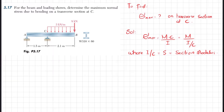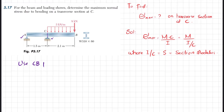The beam is supported at points A and C. Since we have been asked to find the stress at C, we will use the CB portion as a free body diagram.